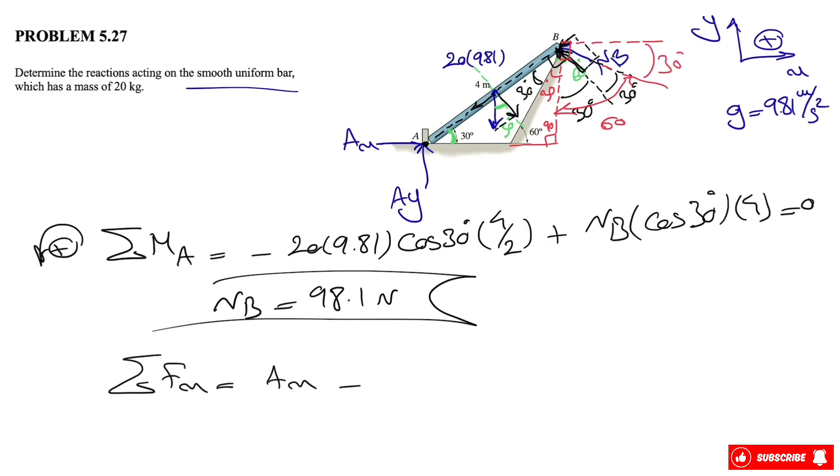So we have minus NB times cosine of 30 degrees equals zero, and we already know NB from the previous part. And we can find Ax in here, which will be 85 newtons.